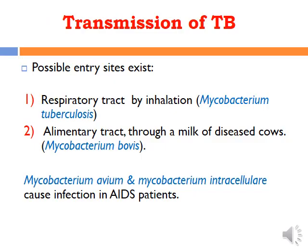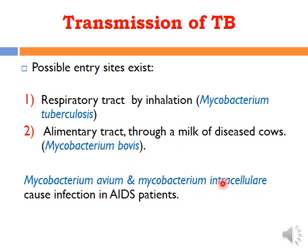Regarding the transmission of tuberculosis, the possible routes of entry include: in respiratory tract tuberculosis, entry is usually by inhalation of droplets carrying Mycobacterium tuberculosis. In the gastrointestinal tract, infection is caused by drinking contaminated milk with Mycobacterium bovis. Mycobacterium avium and Mycobacterium intracellulare usually cause infection in immunosuppressed people.